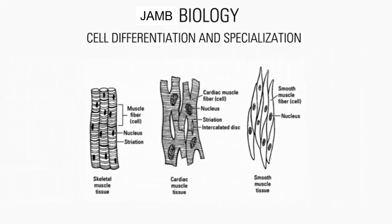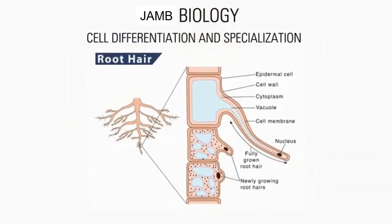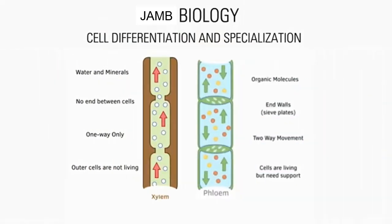We have muscle cells, which are specialized for contraction. For plant cells, we have root hair cells, which are specialized for absorbing minerals and water. We also have xylem and phloem, which are specialized for transporting substances.